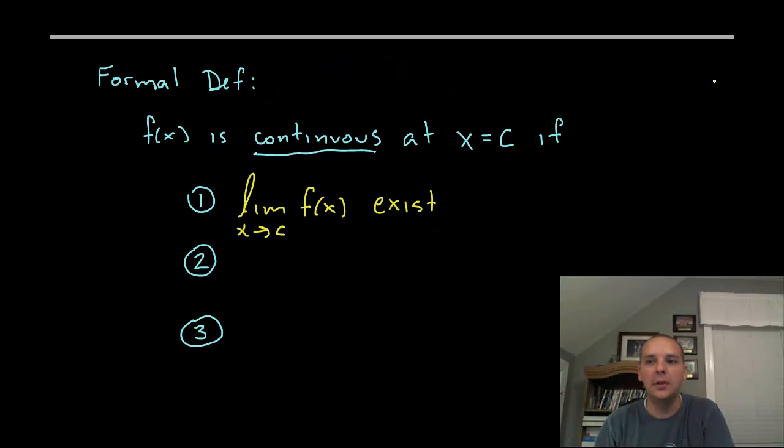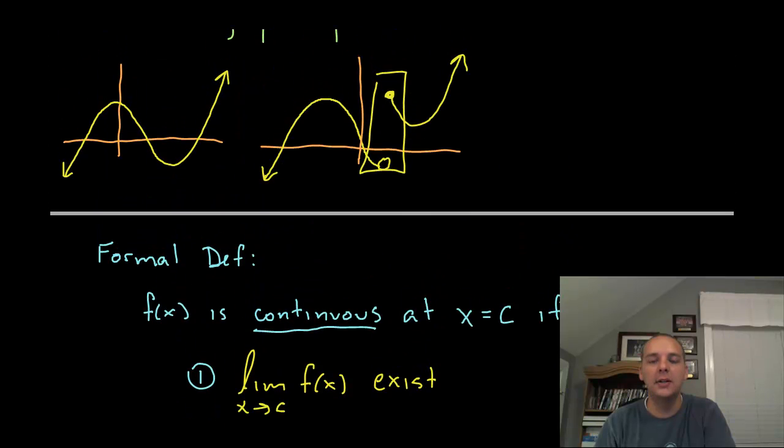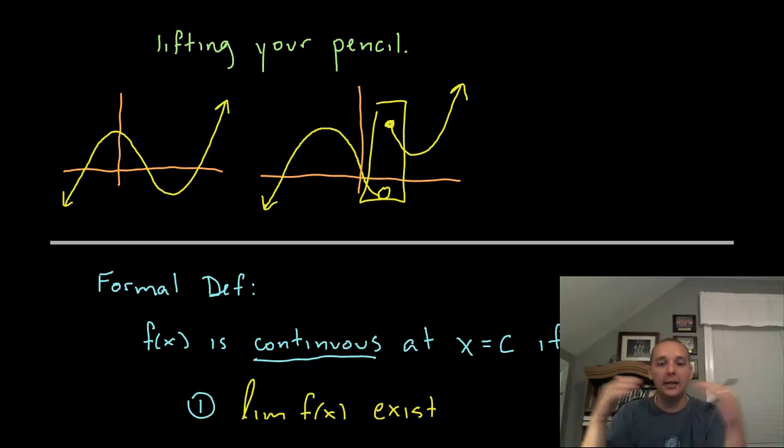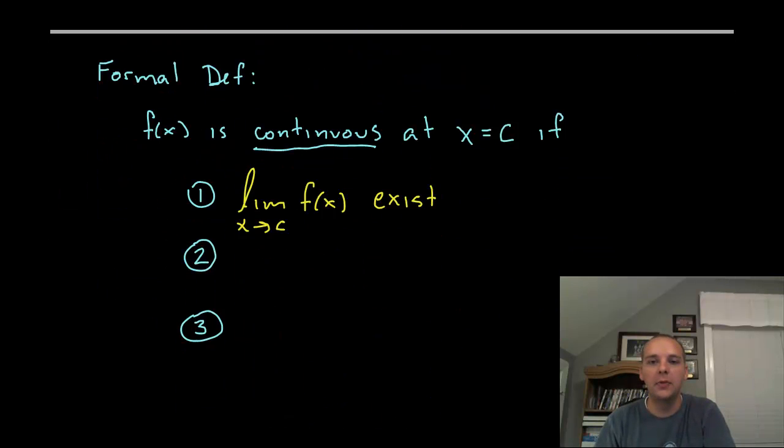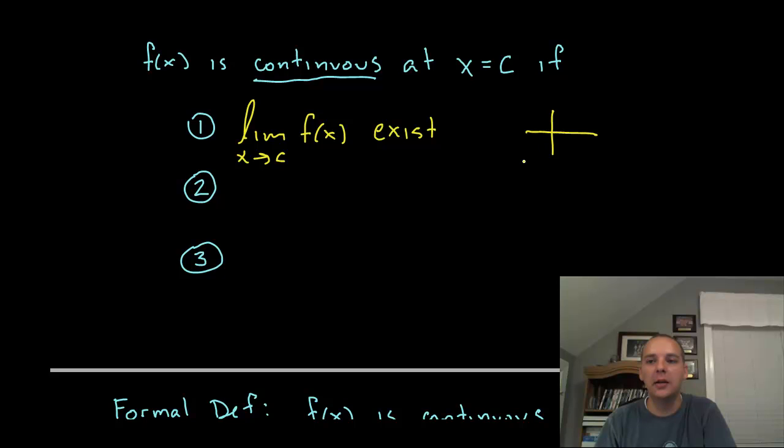But that's not enough, because you can think of an example where the limit might exist at a place but it still might not be continuous. Hopefully you're thinking about something like this where you've got a limit that exists maybe at a point like right here, but maybe at c the f(c), the function value defined at c, is somewhere else. That would not be continuous either. So that brings us to number two: f(c) exists.